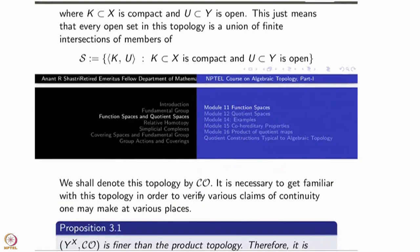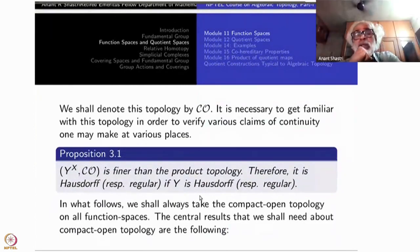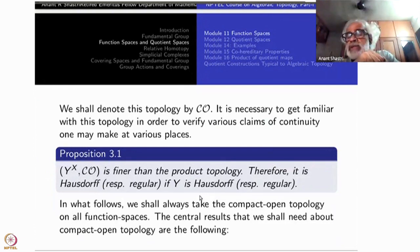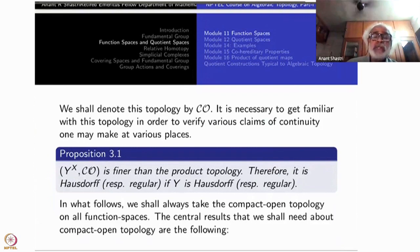There are more open sets in the compact-open topology than in the product topology, therefore convergence here is stronger. A sequence that is pointwise convergent may not be uniformly convergent, but if something is uniformly convergent there will also be pointwise convergence. So if a sequence of functions converges in the compact-open topology, it will also converge in the product topology, because the compact-open topology is finer.